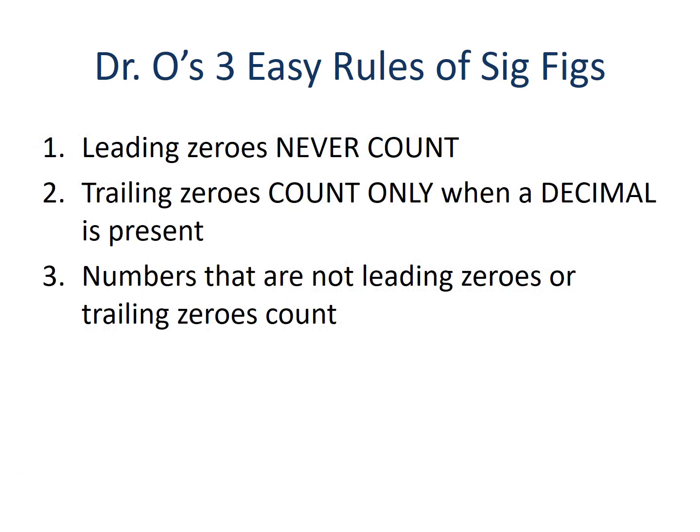Here once more are the three easy rules for determining significant figures. Rule number one deals with zeros to the left of a number — leading zeros never count. Rule number two deals with zeros to the right, at the end of a number — trailing zeros count only when a decimal is present. Rule number three deals with everything in between. Apply the rules in that order and you'll get it right every time.